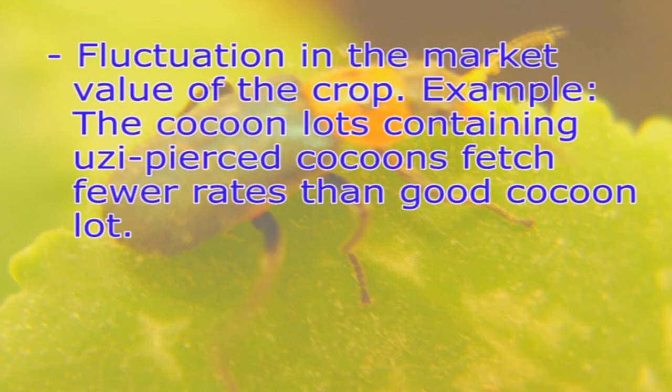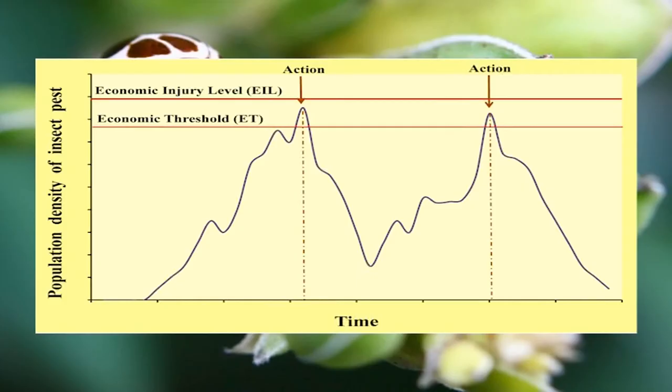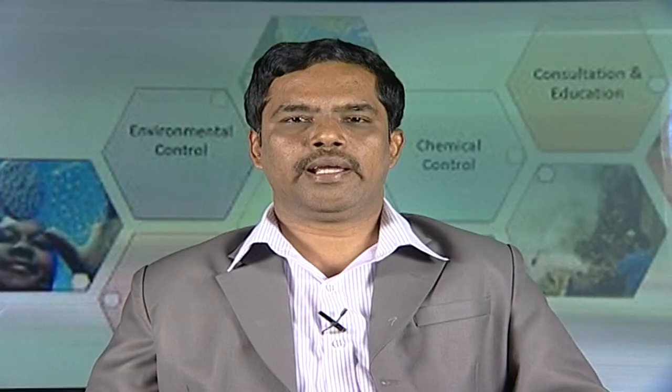Let us study the time of application of pest control measures. From the point of view of pest control, there are two threshold levels in pest populations: damage threshold and economic threshold (also known as action threshold). The damage threshold is the level of pest populations above which crop losses occur and below which pest populations are of no significance. The economic threshold is the pest population level, well below the damage threshold, at which control measures should be initiated to prevent the population reaching the damage threshold.